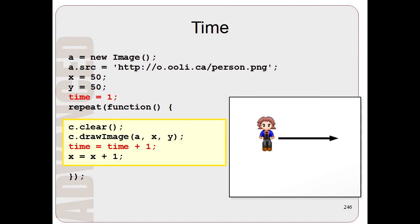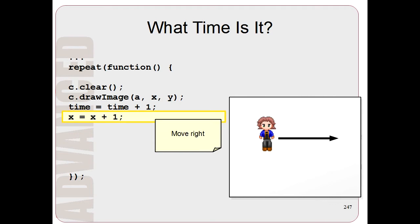Now each time we run the program, we want time to move forward. So we'll add 1 to time using time equals time plus 1. So in our current program that we keep repeating, you'll see we have this command here, x equals x plus 1, which makes the person move to the right.